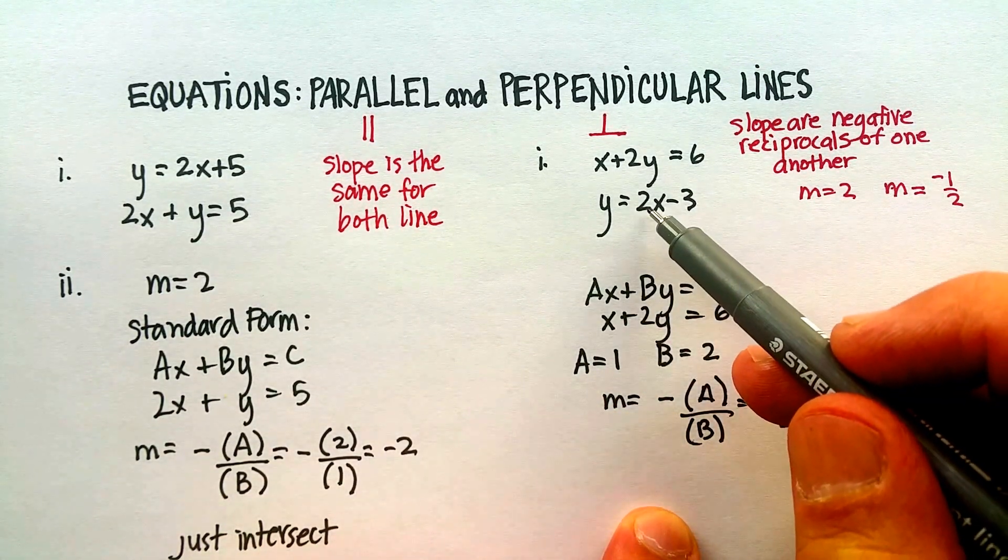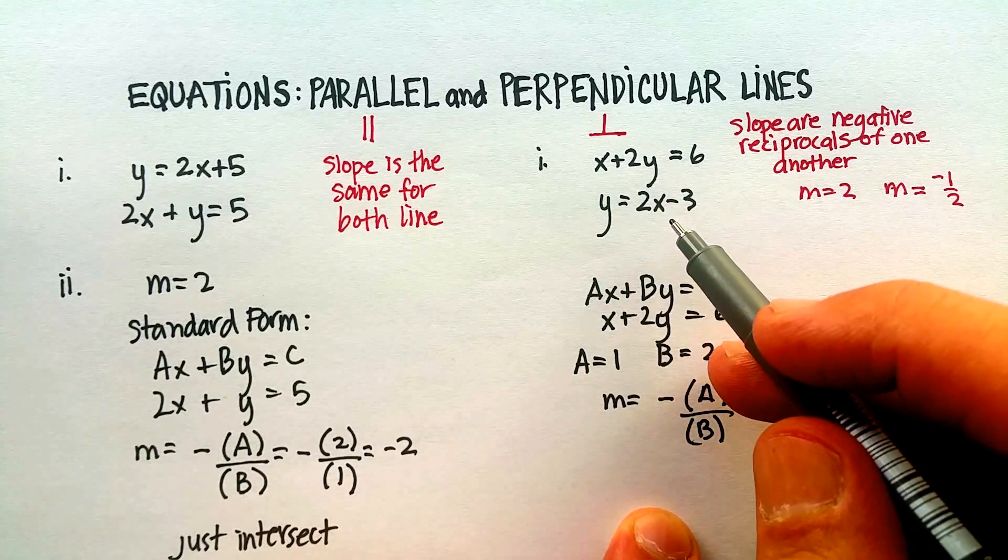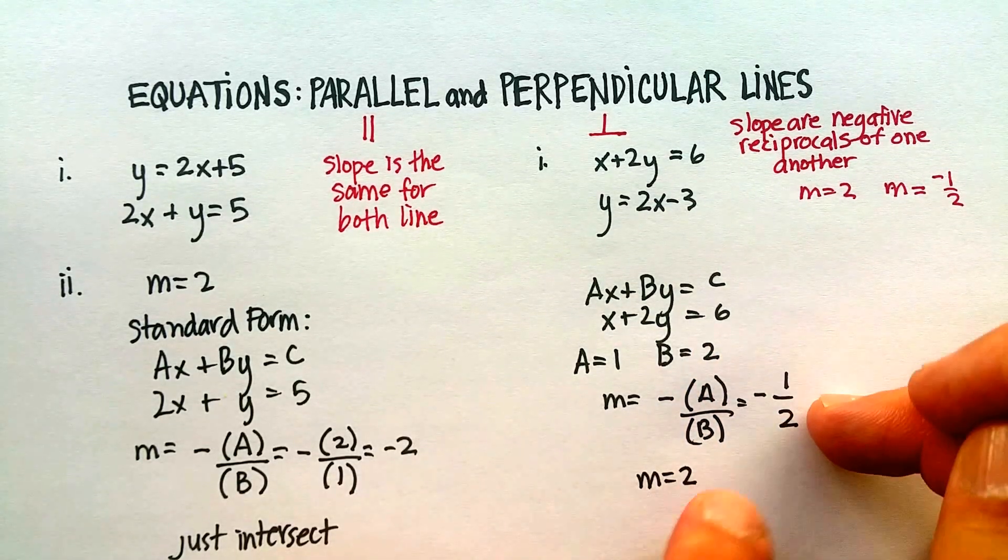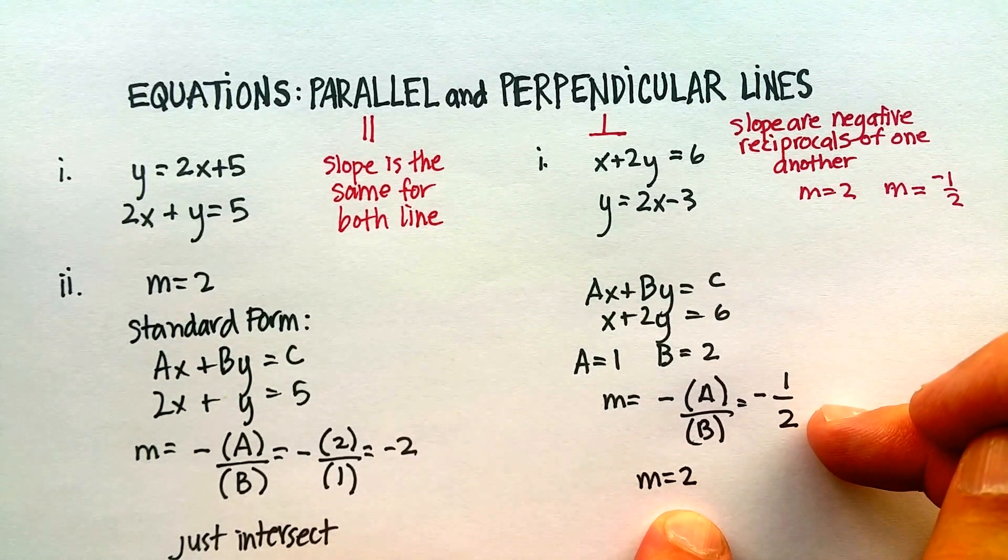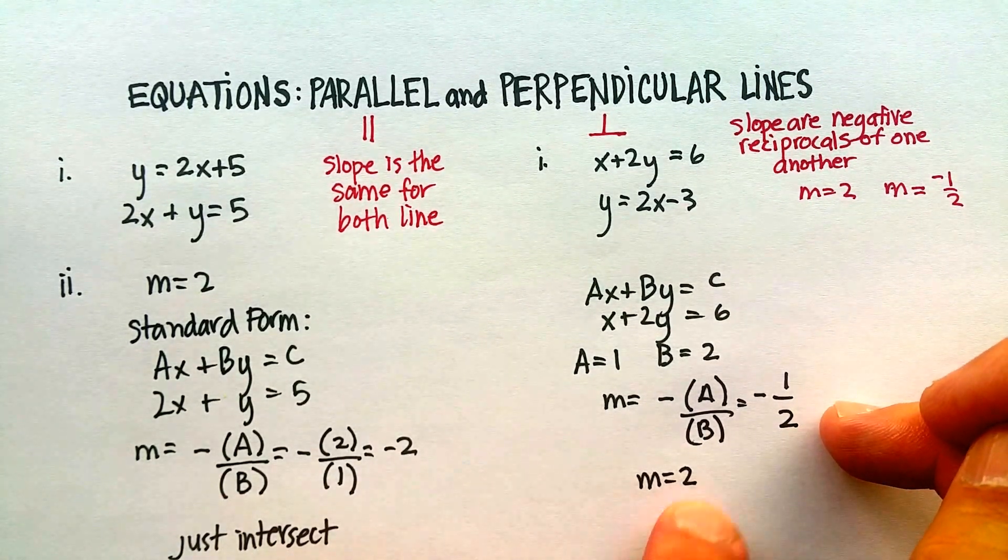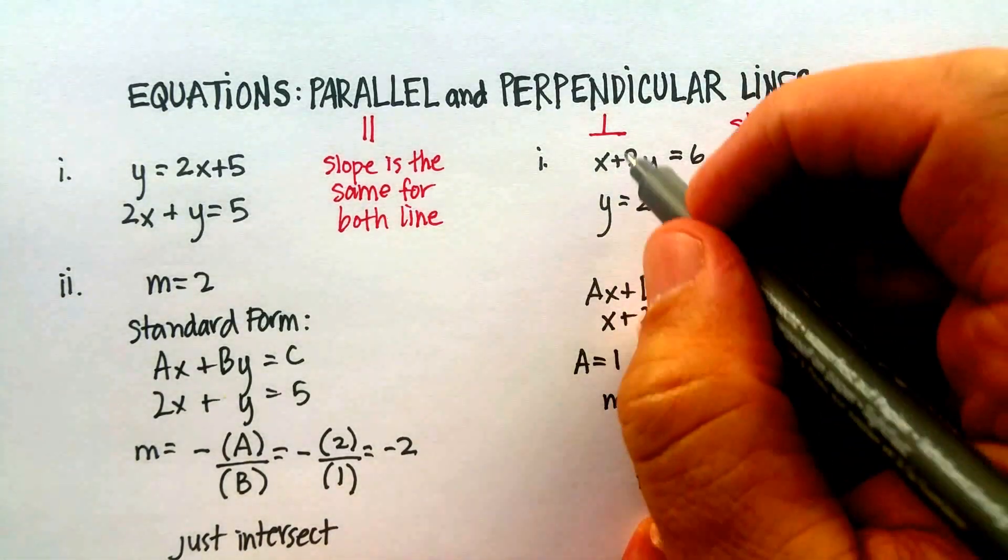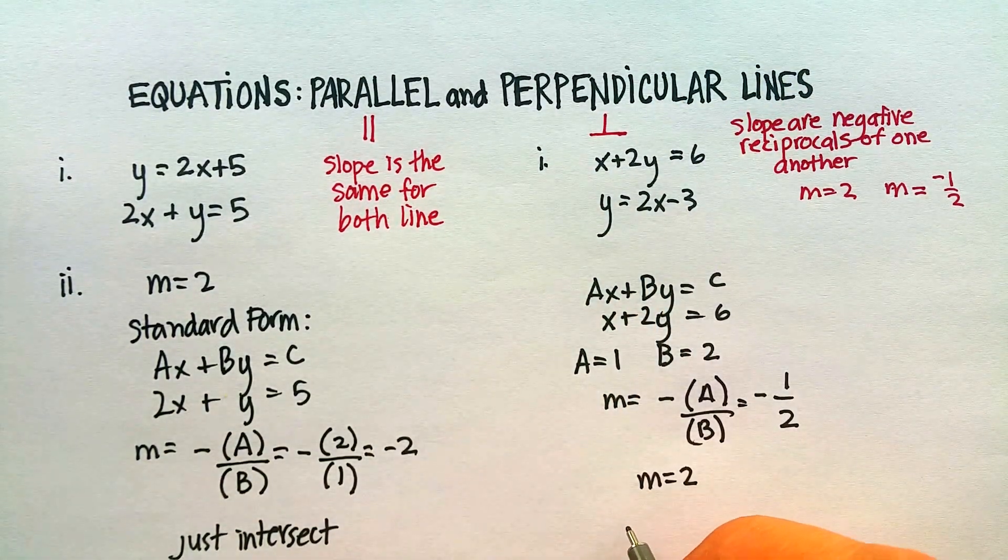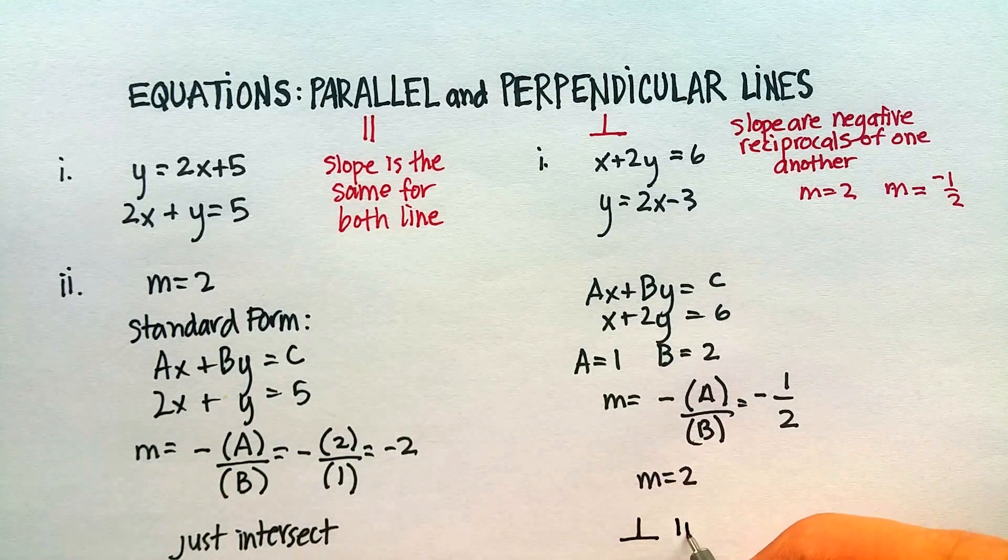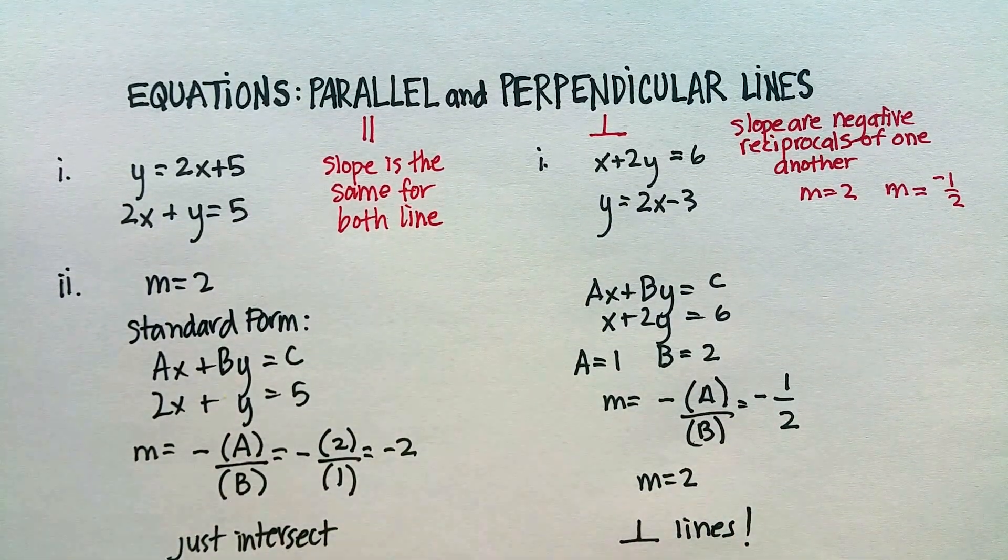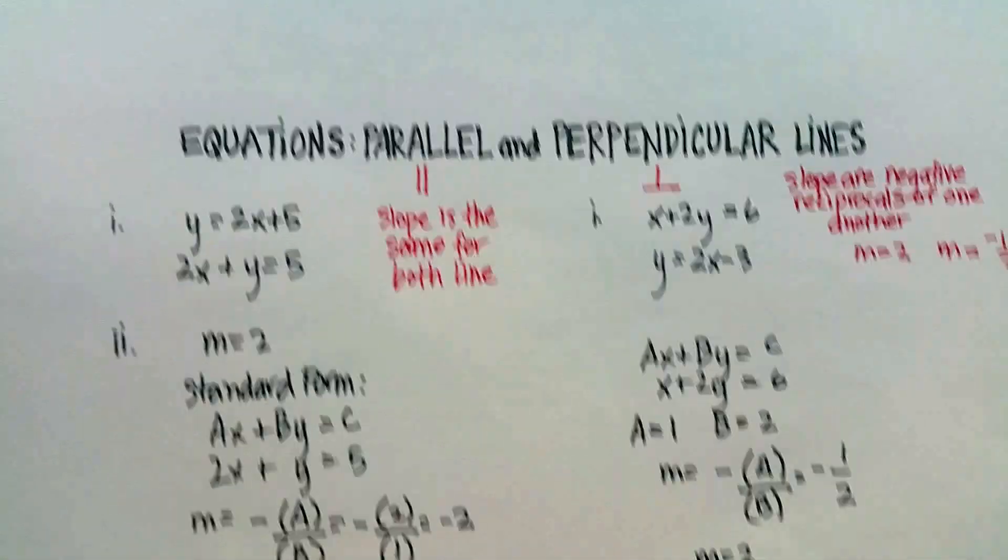But when I look up here, I see that for the second equation, the slope is just simply 2. So what is going on with these two? These would be negative reciprocals, just like we did up here, of one another. These lines are perpendicular. Let's move on to the other two examples that I have for you.